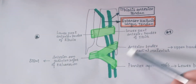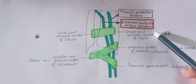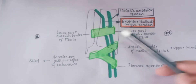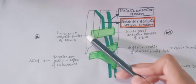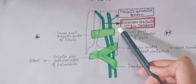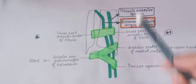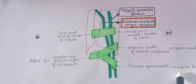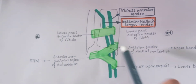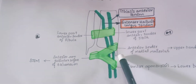Next is the extensor hallucis longus tendon. It is not enclosed by the superior extensor retinacula, and it is not enclosed by the lower band. It is enclosed by the upper band.